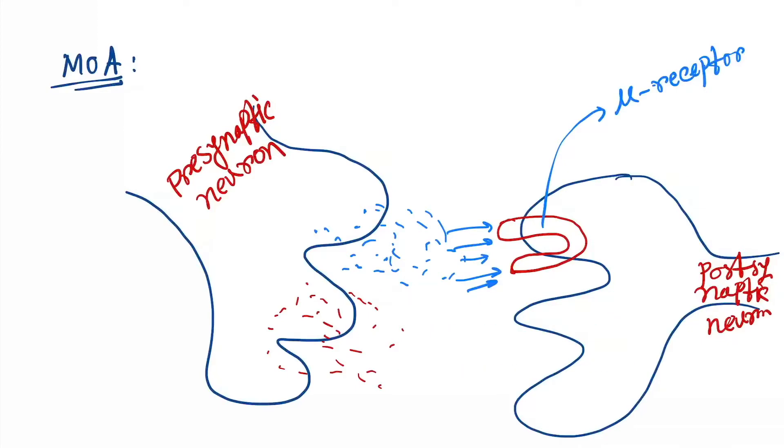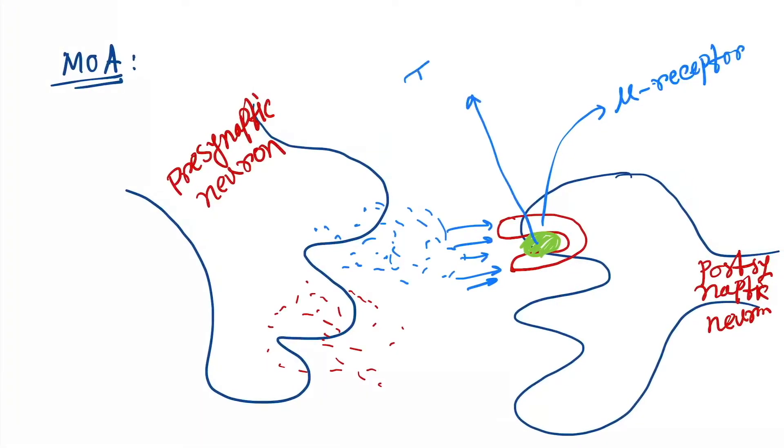But Tramadol comes and binds to the mu receptor. So what will happen now? Serotonin will not be able to bind to the mu receptor, and there will be inhibition of the neuronal signal transmission. Further, no more pain sensation will be transferred.